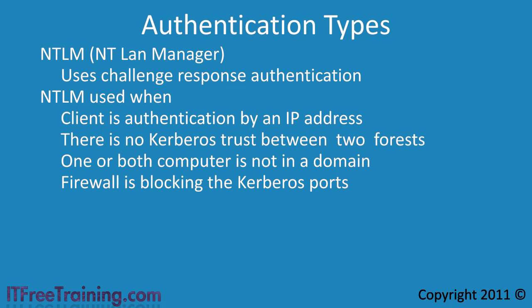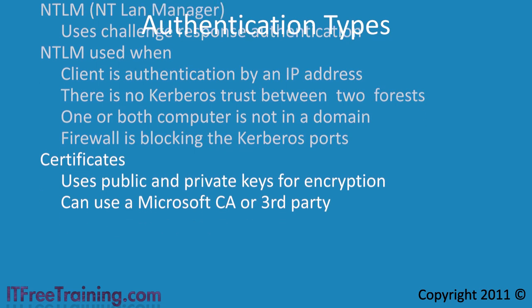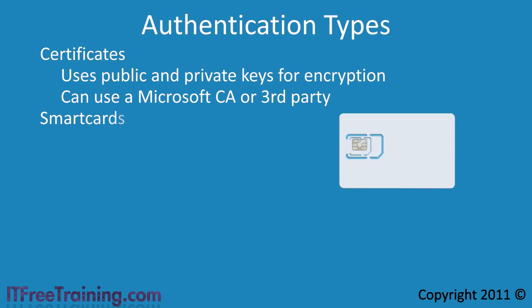The next kind of authentication that Windows supports is certificates. Certificates use public and private keys to encrypt information travelling across the network. With Windows Server you can deploy a Microsoft Certificate Authority or use a third-party Certificate Authority, and Windows 7 will support certificates generated from either. One use of certificates is in smart cards — the smart card has a chip inside which holds the certificate, so you cannot authenticate on the network without the smart card.